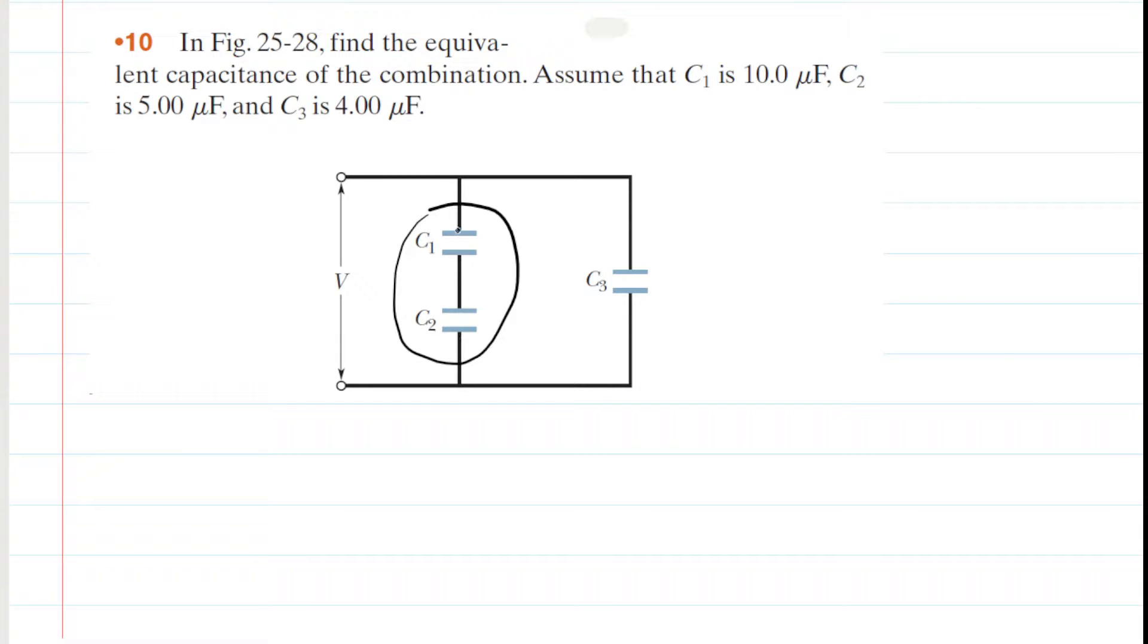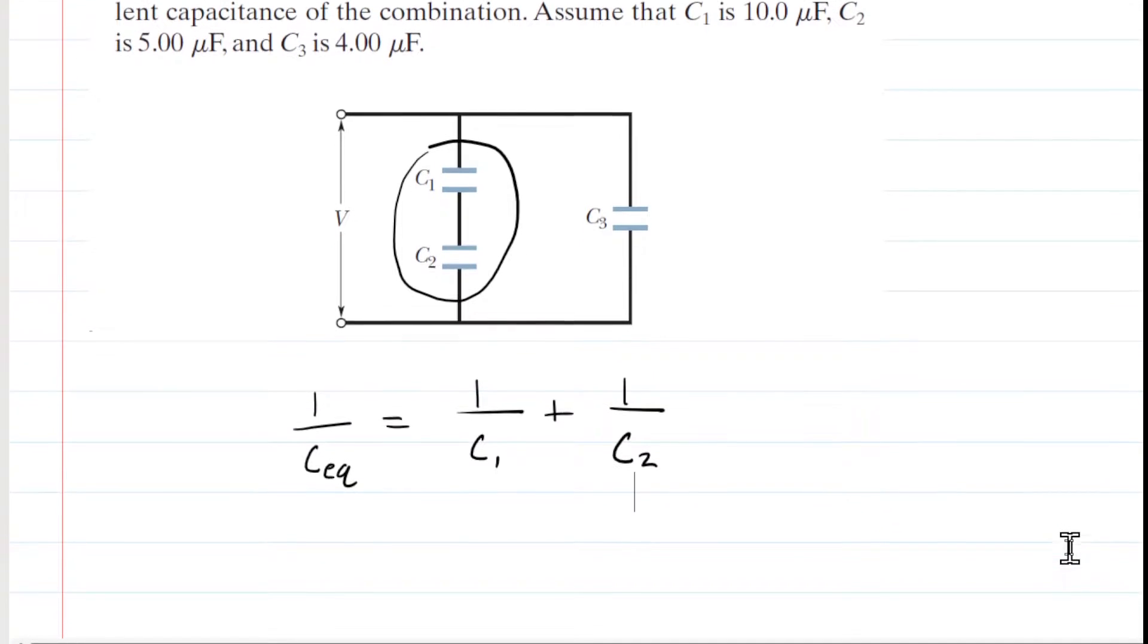It would be easiest to combine those two capacitors first. When you combine capacitors that are in series, you must obey the following relationship. What we'll do is simply plug in the given values of C1 and C2, which were stated earlier.